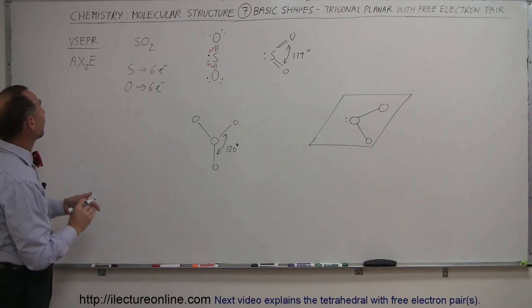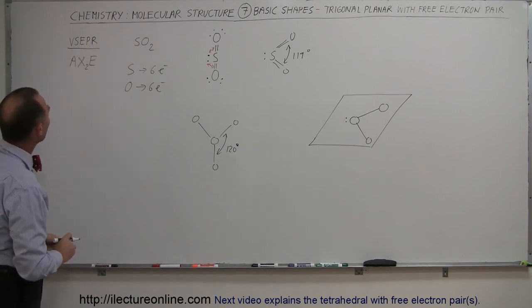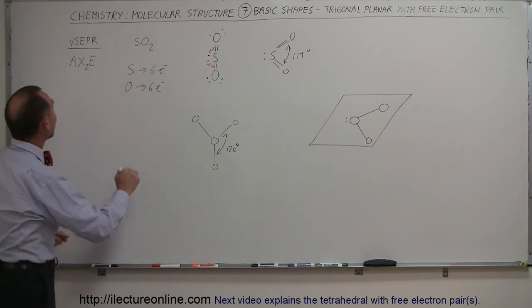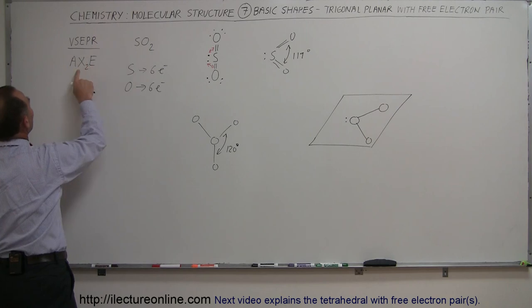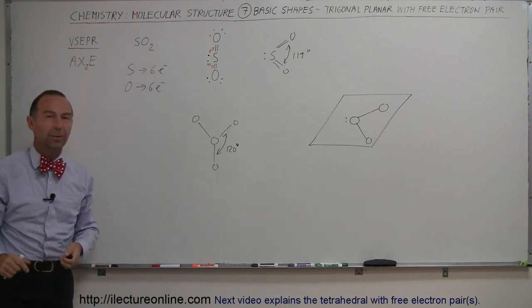And also notice the VSEPR notation. This is the valence shell electron pair repulsion. I almost forgot what I meant. So electron pair repulsion. So we have one central atom, we have two atoms at the end, and then we have one electron pair. And that's how we write that.